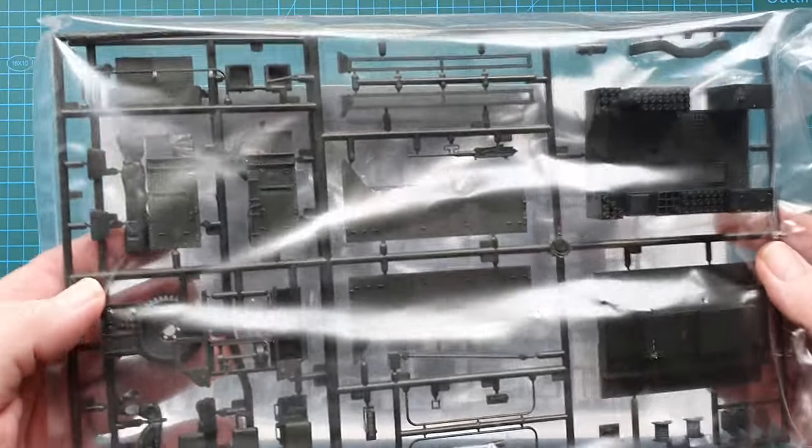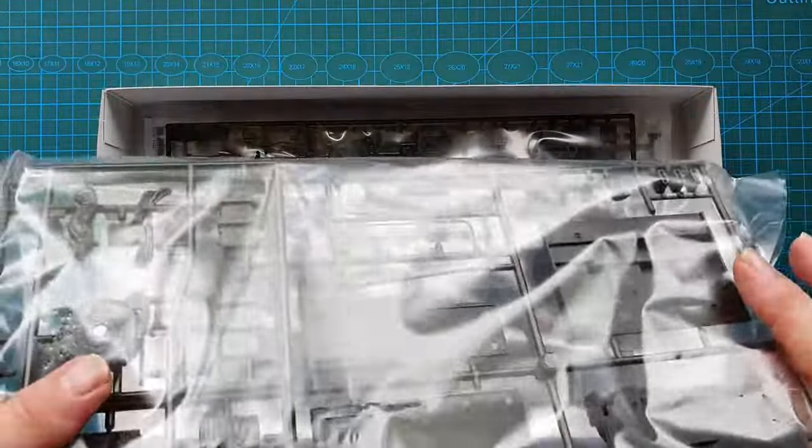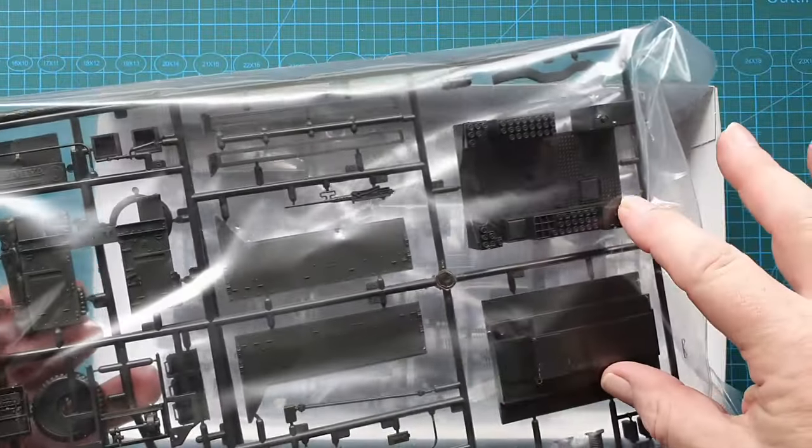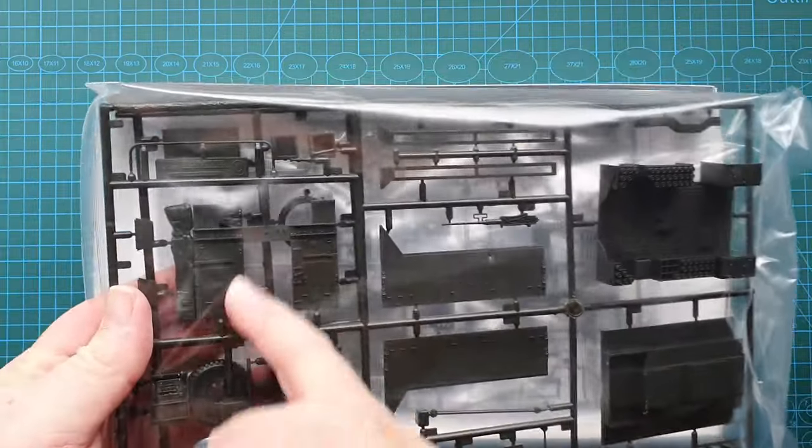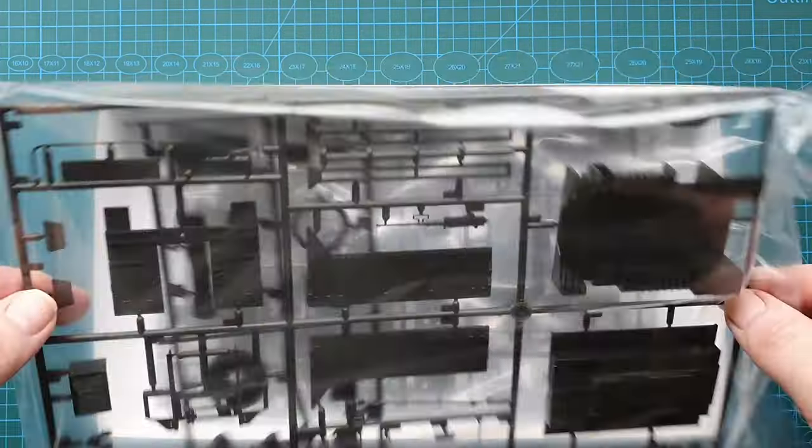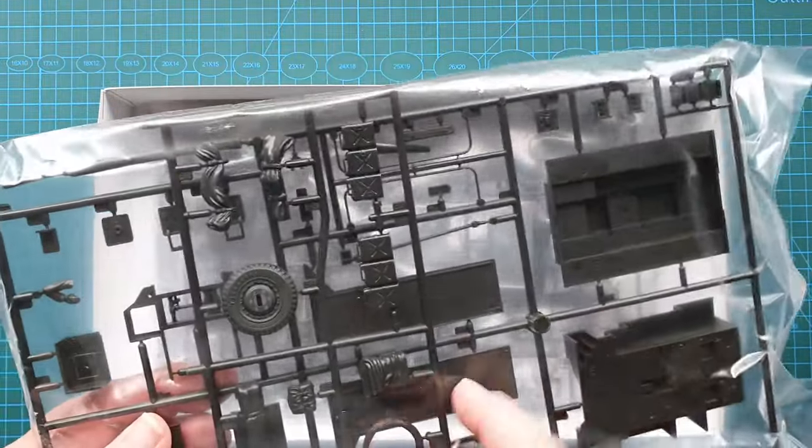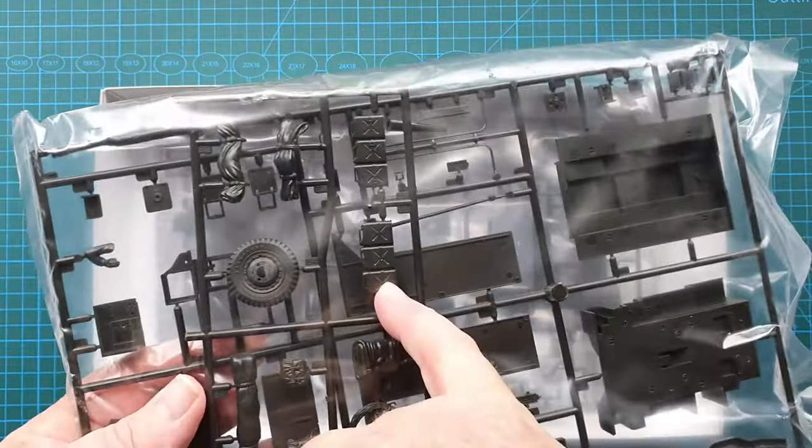This particular sprue is actually two sprues in one. This is the main back part, sides and back of the half-track, plus some spares including jerry cans, tarps, etc.